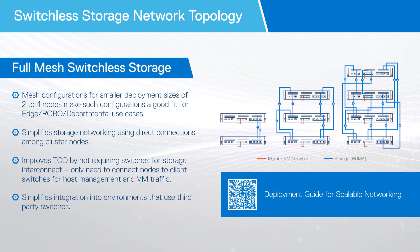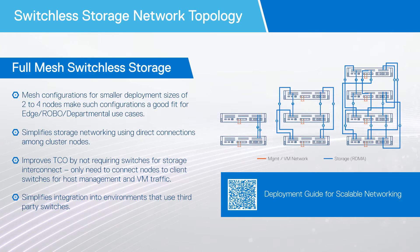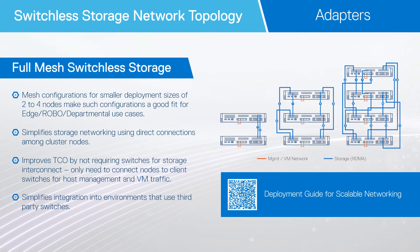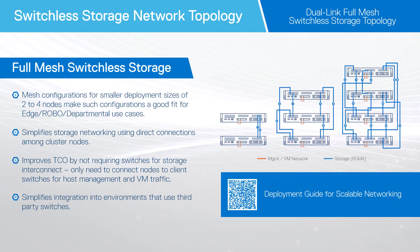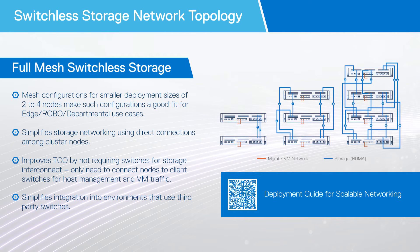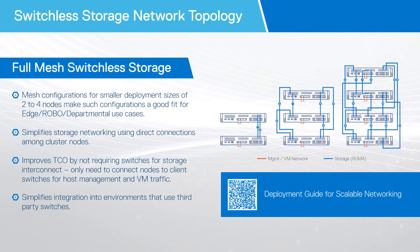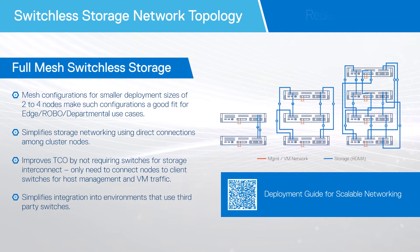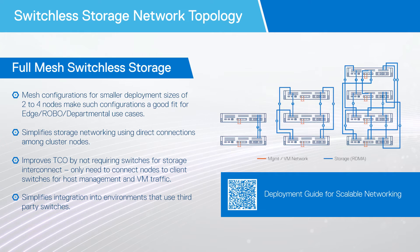These sample diagrams are right out of our switchless deployment guide available on the Dell Technologies Info Hub. This guide indicates how many PCIe slots are available in the different AX nodes and how many adapters are required for the different switchless storage configurations. For example, configuring a dual-link full mesh switchless storage topology for a four-node cluster requires three adapters. It is very important to take cluster size into account before deploying a full mesh switchless storage cluster. Remember that expanding an existing switchless storage topology is not supported — a redeployment is necessary to perform such an expansion, or if attempting to go from a single-link to a dual-link full mesh design.